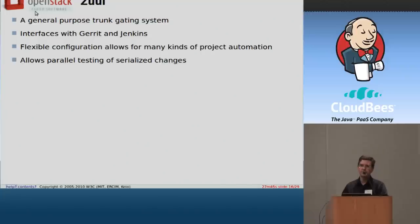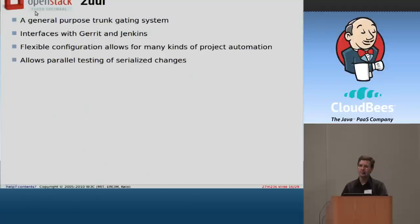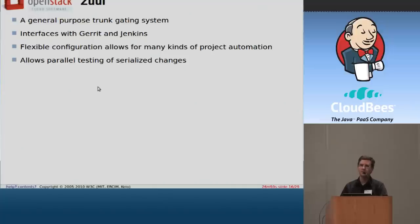The thing that took us past what we could do with the Gerrit trigger plugin was the parallel testing of serialized changes. When we're doing trunk gating, we want to land every change to the trunk in sequence because we want to make sure no change breaks the trunk. We can't just merge a whole bunch of changes and then go back and figure out which one broke. We want to test a proposed change and if it works, merge it; if it doesn't, don't merge it. But our testing system takes quite a while — about 40 minutes to an hour, and it's about to get a lot longer as more integration tests come online.